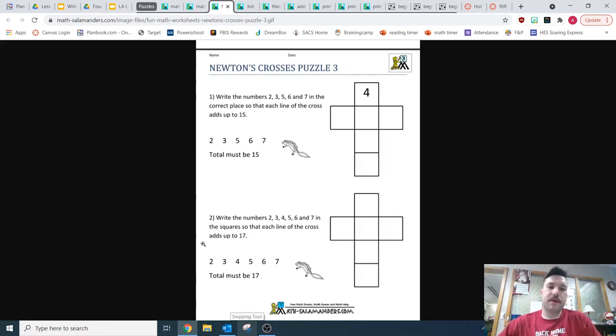For the crosses puzzle, what you're going to do is kind of like the square puzzle. You're going to make sure that each row and column adds up to 15 in this first one, and in the second one, each row and column adds up to 17. Now the first one, you can see they start you with a 4. So you're going to need 4 plus 3 other numbers that add up to 15, but then 3 numbers going this way that add up to 15 as well.